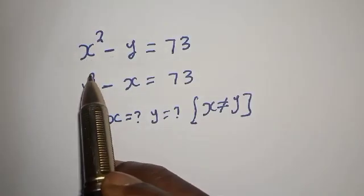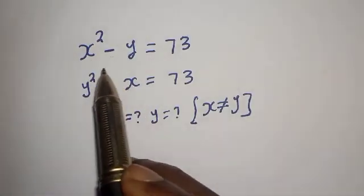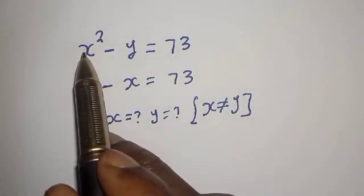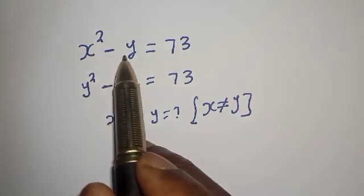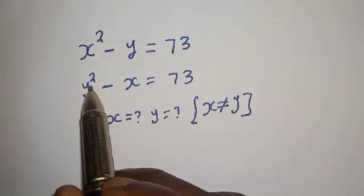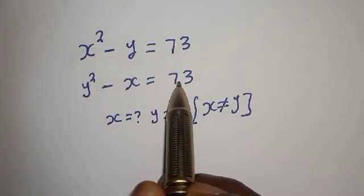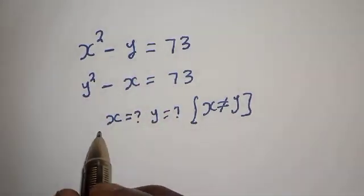Hello, how to solve for x and y from these given equations. x squared minus y is equal to 73, and y squared minus x is equal to 73.